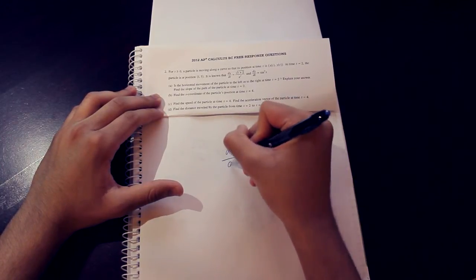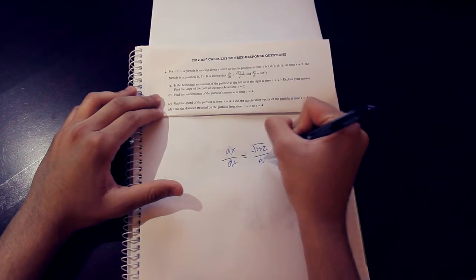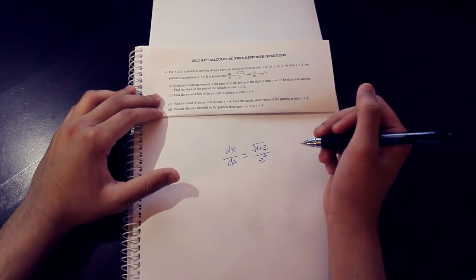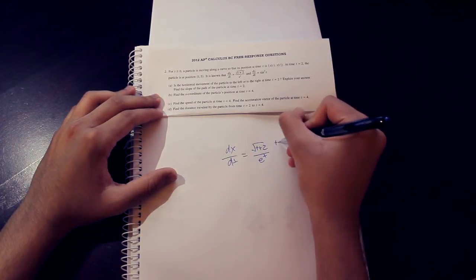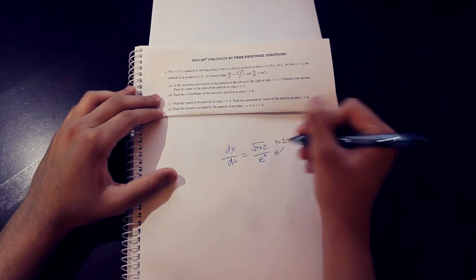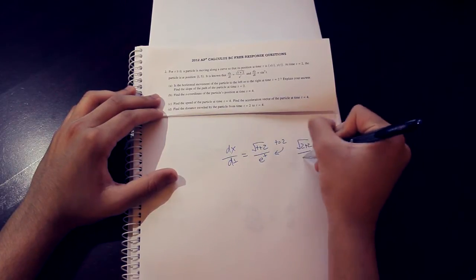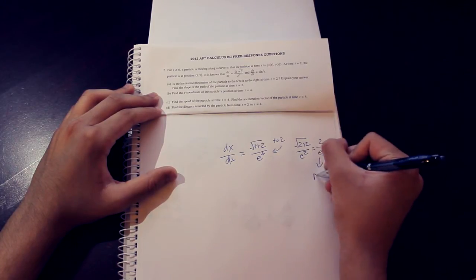It says here that dx dt is the square root of t plus 2 over e to the t power. Now, what we're going to do is because we're trying to find it at t equals 2, we're just going to plug in t equals 2 to this situation right here. So we get 2 over e squared.